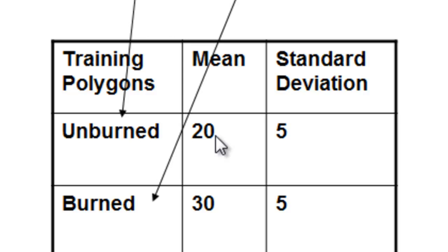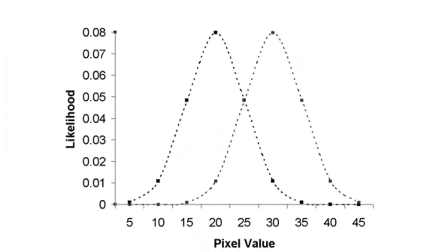In this hypothetical example, the unburned pixels have an average digital number of 20 and the burned pixels have an average pixel value of 30. The variation between pixels is the same within both polygons. Once we have our representative sample from our training polygons, we'll use a classifier to predict for every pixel which training polygon it's more likely to come from. One type is the maximum likelihood classifier, which assumes a bell-shaped or normal distribution peaking at the means.